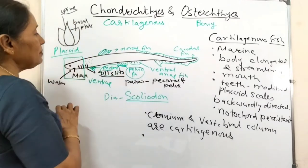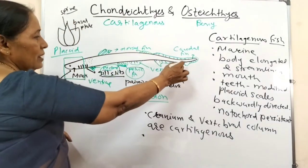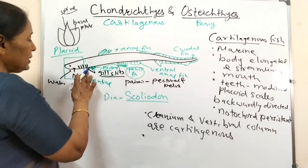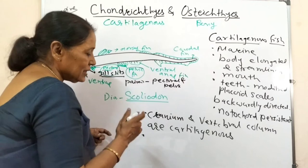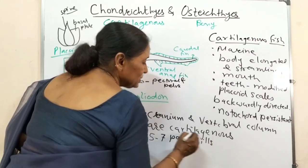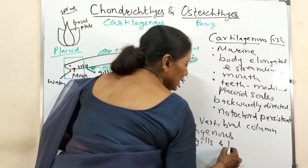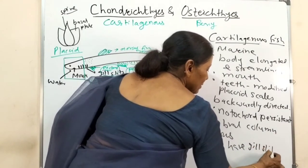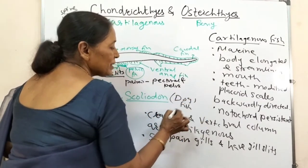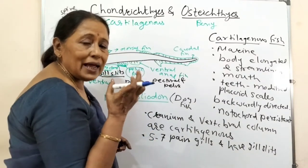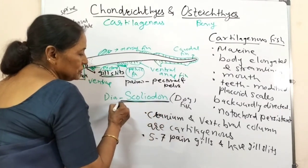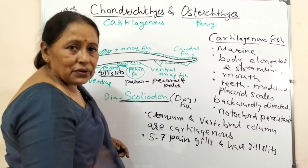They have a heterocercal tail and two paired fins and three unpaired fins. One very important point: they have five to seven pairs of gills, and they also have gill slits. Here is Scoliodon, also called dogfish - it is found on Indian sea coasts and is also called the Indian shark. It is called dogfish because it has a very strong sense of smell like a dog.